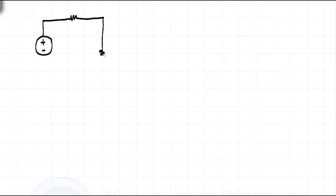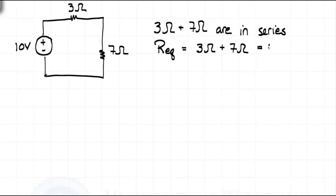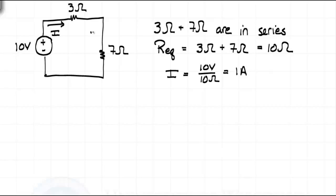If we take a look at a simple series circuit with a 10-volt source, with a 3-ohm resistor and a 7-ohm resistor in series, we could combine the 3-ohm and the 7-ohm resistor into an equivalent resistance of 10 ohms. Then we could find the current from the source by dividing the source voltage by the equivalent resistance seen by the source, and we find the current is 1 amp.